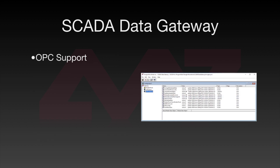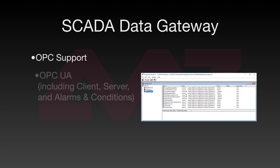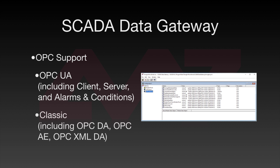The SCADA Data Gateway supports a variety of OPC options, including both OPC UA and OPC Classic. OPC UA allows platform-independent interfacing with SCADA systems. Support in the Gateway includes client, server, and alarming conditions. OPC Classic support includes OPC Data Access, OPC Alarm and Events, and OPC XML Data Access.